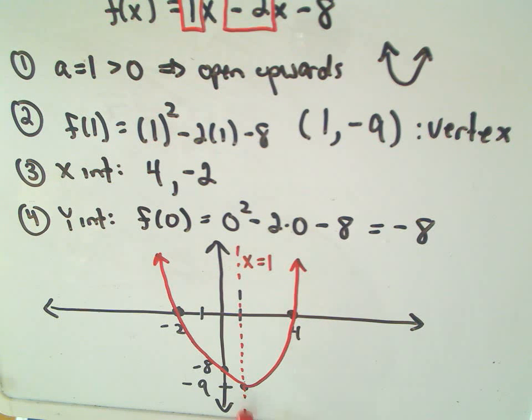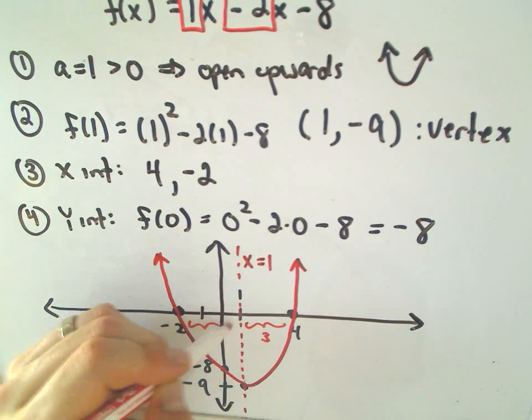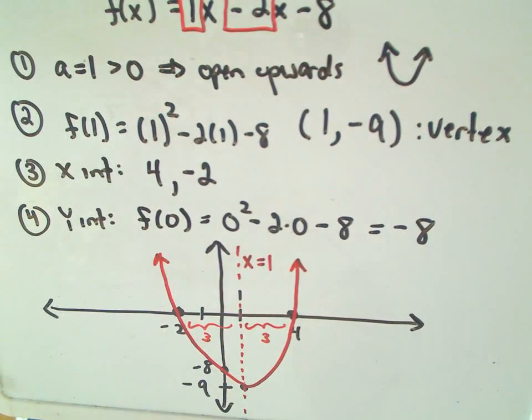And if you think about it, that makes sense. The x-coordinate of 4, that's 3 units away from the axis of symmetry. Also, negative 2 is 3 units away from the axis of symmetry.